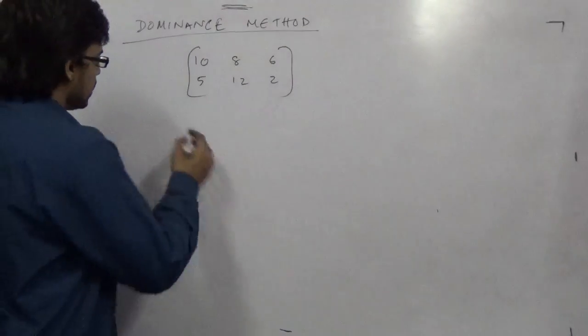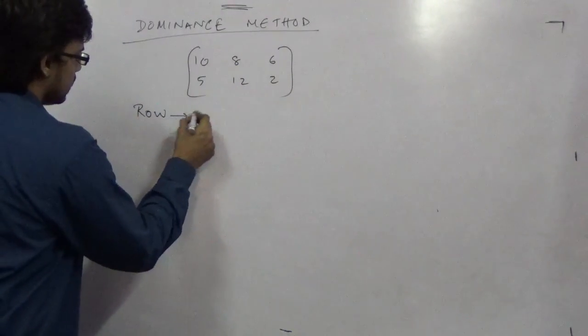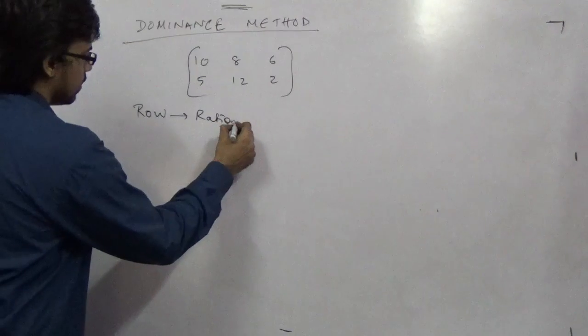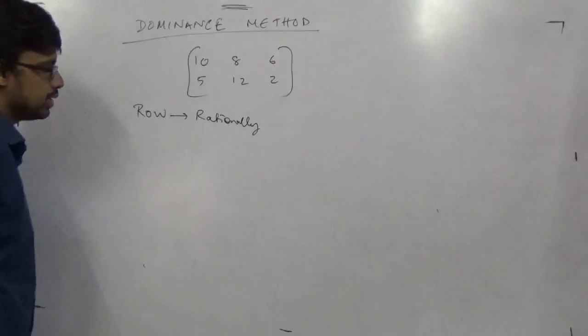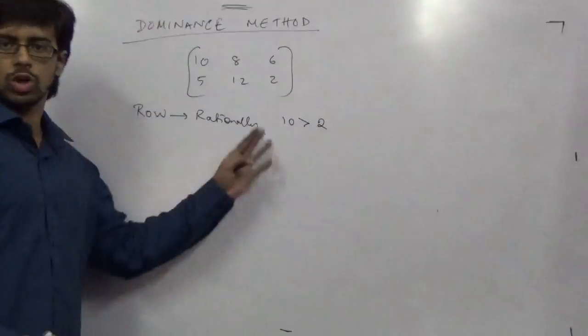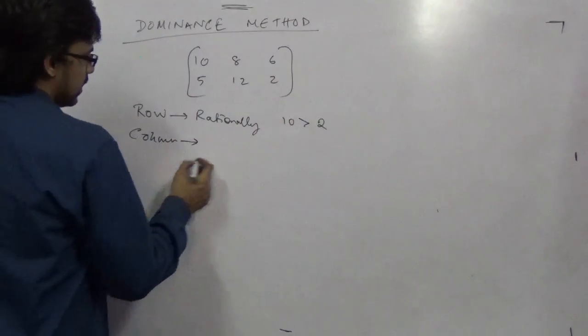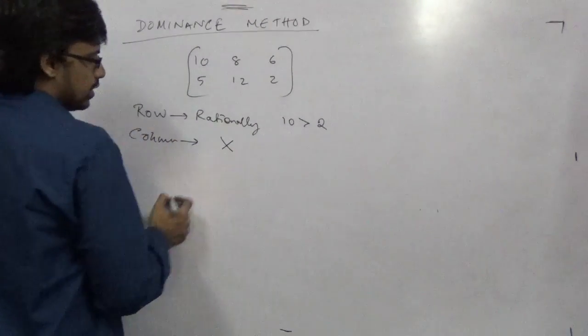How are they dominating? Remember, in respect to rows, they behave rationally. It is a good way. That is, if 10 dominates 2, the larger dominates the smaller. But in case of columns, they behave irrationally, not rationally.